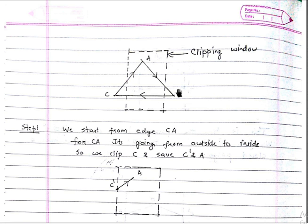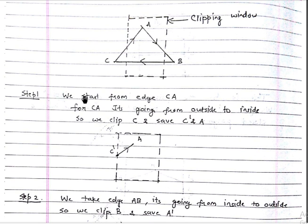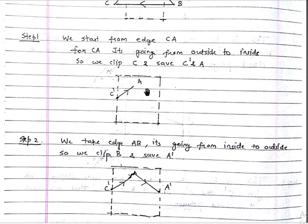Let's look at this example. This is our clipping window and this is our polygon — a polygon is any closed shape with more than one edge, like a triangle, square, rectangle, pentagon, or hexagon. Step one: we start from edge CA. One endpoint is outside, one is inside, and it's going from outside to inside. So we clip the part up to the clipping window, create a new point called C dash, and save C dash and A.